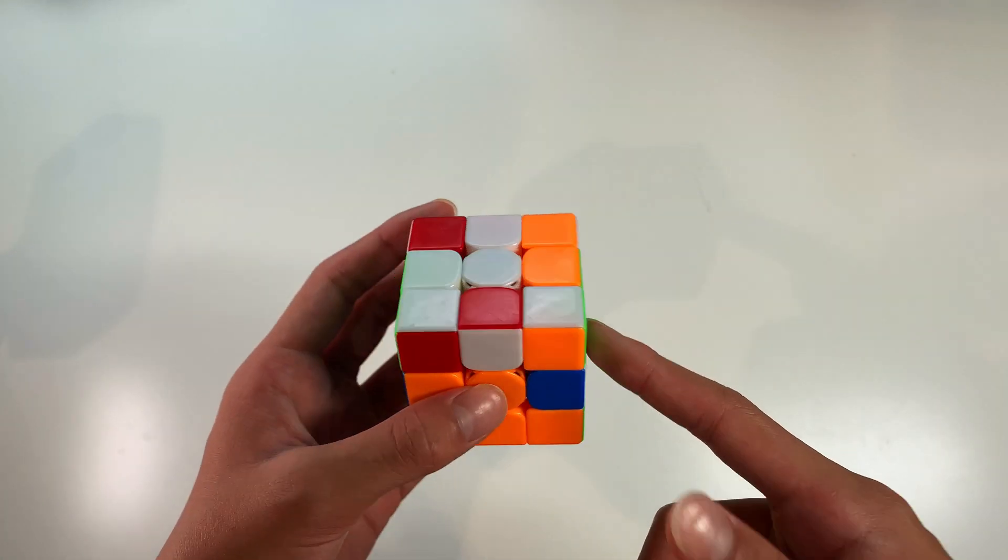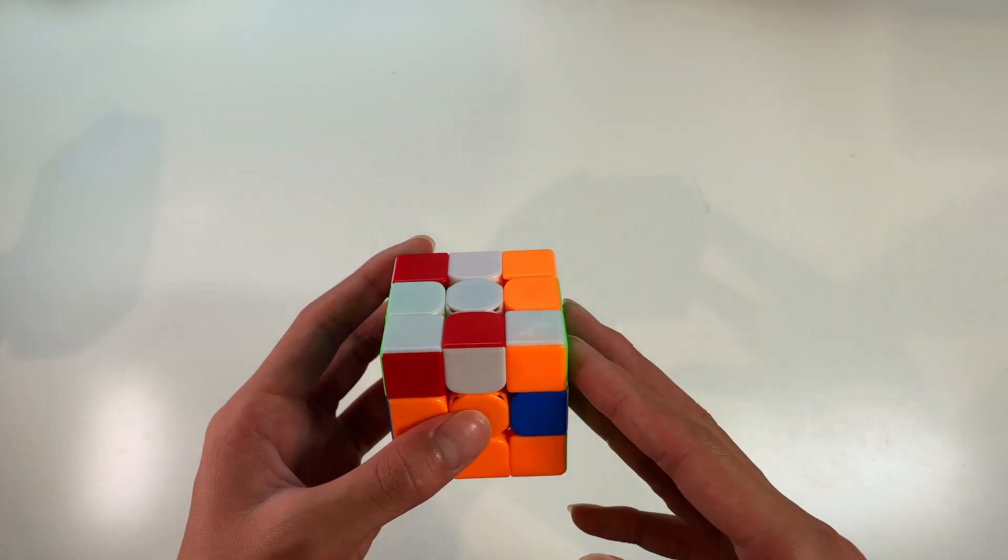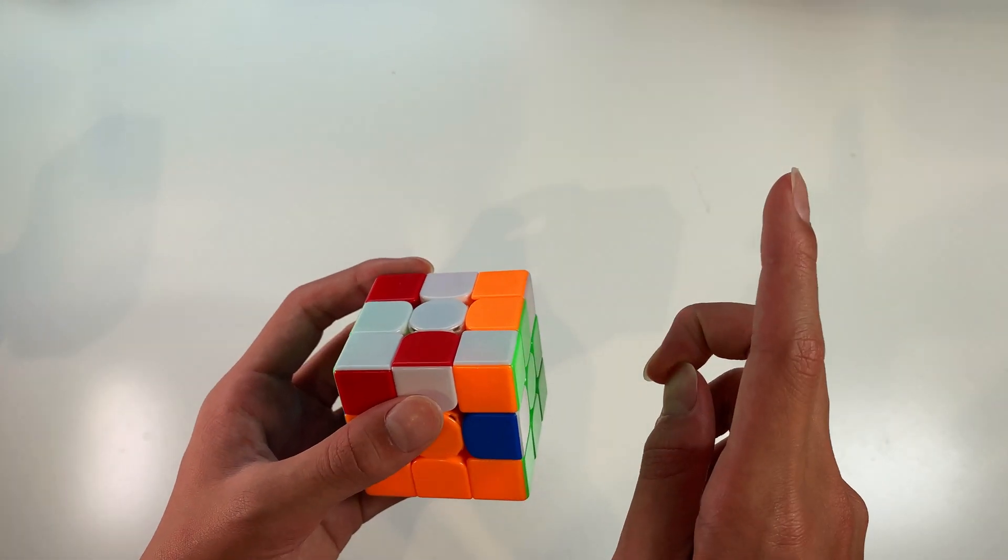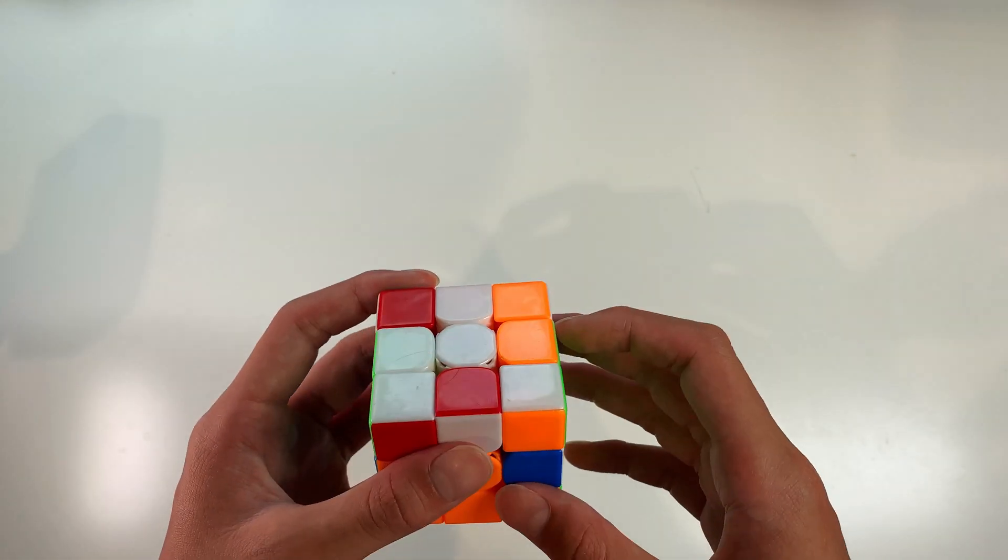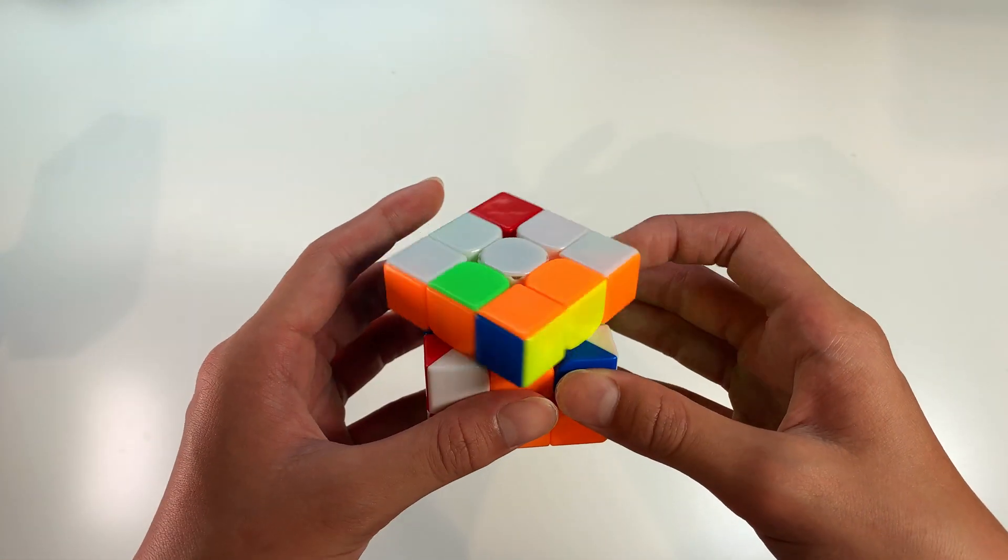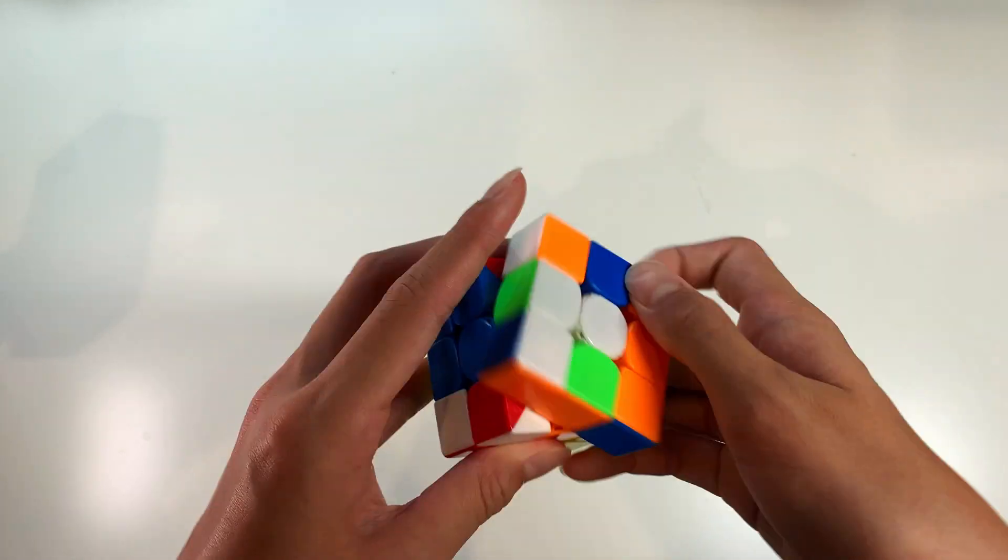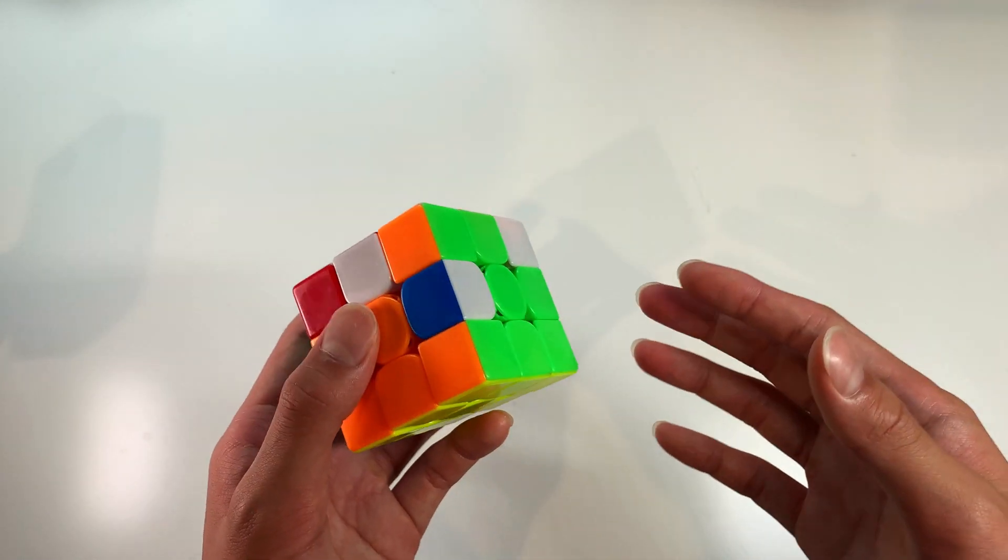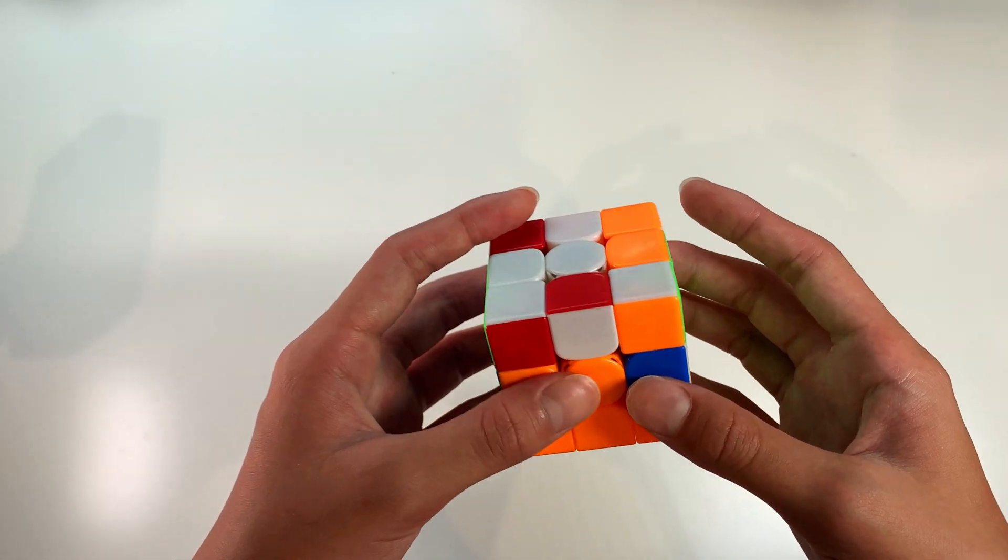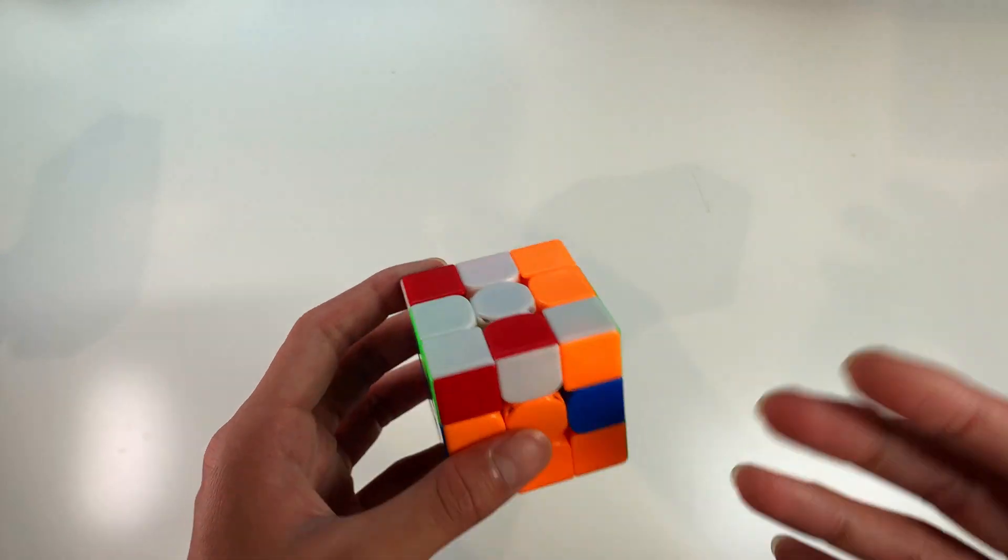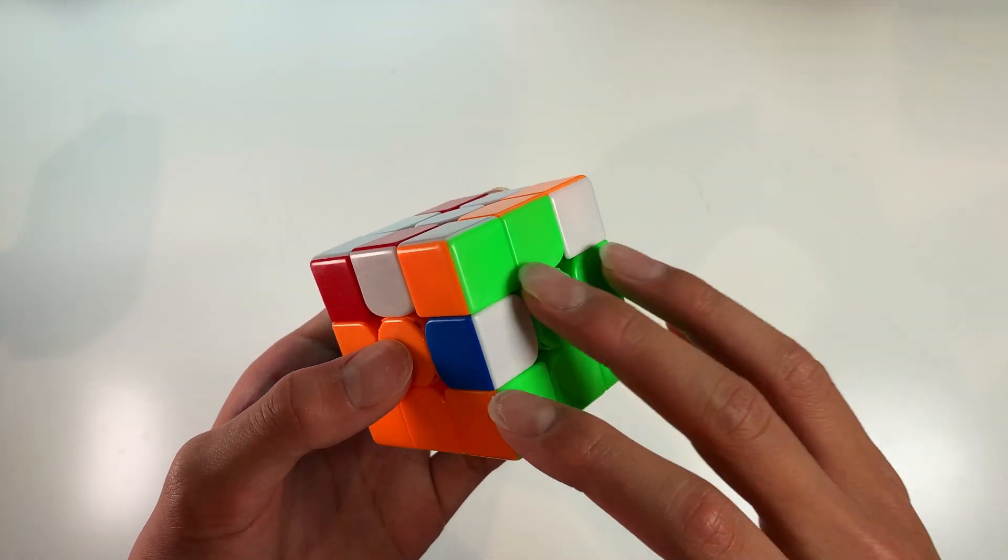Now we have this case. I actually showed how you can solve this case in part one of my advanced F2L tricks and algorithms video which you can see using the card up here or follow the link in the video description. So in that video I showed how you can use a wide sexy sledgehammer to solve this. But there is another way to solve this which doesn't require wide moves. Although I'm not too sure why you wouldn't want to use wide moves because wide moves is basically just arm moves. But if for some reason you're not a big fan of that algorithm, here's another way to solve this case.